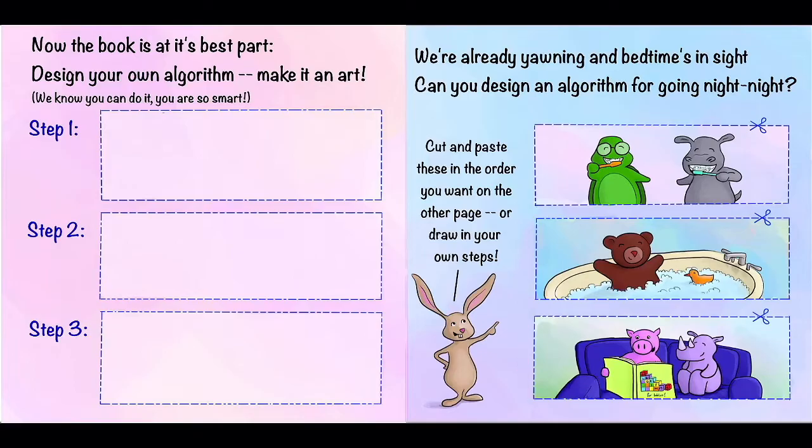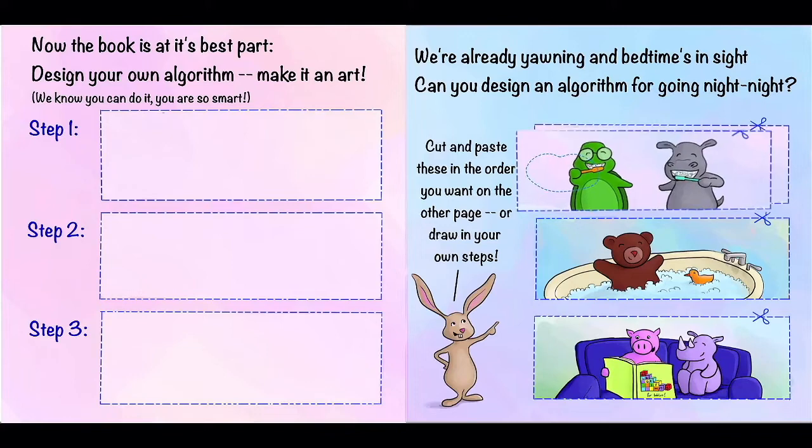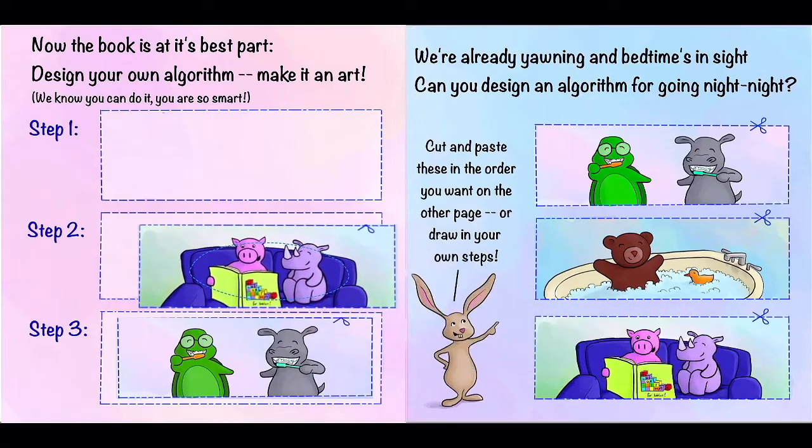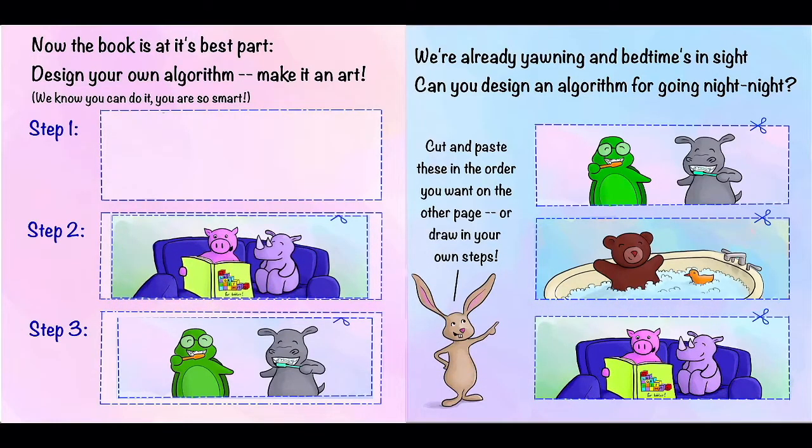So now we can put these, or whatever we want, in any order that we want to make our own algorithm for going to bed. So I'll do it just for me, at least with my digital copy here. I'm actually going to design this algorithm in reverse order. So the last thing I do before going to bed is brush my teeth. So I'm going to put toothbrushing in step three. And before that, I like to read a book. So let's put story time in step two. Now, while a bubble bath does seem appealing, I'm more of a shower in the morning kind of a person, and the instructions do say that we're allowed to draw in our own steps. So I think I'm going to do that for step one.